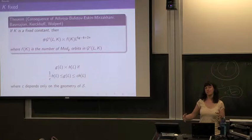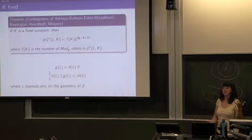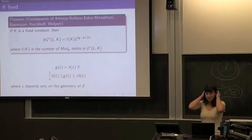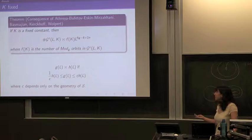For simple closed geodesics, you can see this: you just cut along your simple closed curve and you get some topological type. It's similar with K intersections — the curve uses a sort of 4-valent graph, and you can see there are finitely many orbits. Figuring out the dependence on K is sort of what I'm trying to do.